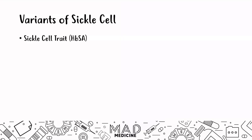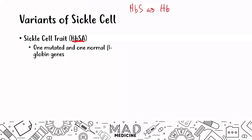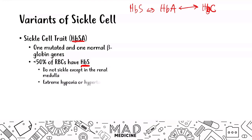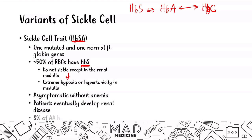Sickle cell trait has only one mutated sickle cell gene in the beta globin gene — one normal, one mutated, denoted as HbSA. These patients have less than 50% HbS red blood cells, and sickling is generally not seen except in the renal medulla where extreme hypoxia and hypertonicity can trigger sickling. These patients are usually asymptomatic without anemia but may develop renal disease later in life. Notably, 8% of African Americans have sickle cell trait.